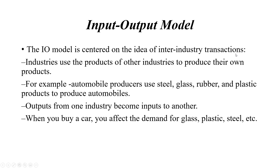The input-output model is centered on the idea of inter-industry transactions — industry uses products of other industries to produce their own products. For example, the automobile industry produces cars and trucks and needs steel from steel mills, glass, rubber, tires, plastic, seat covers, and leather. Output from one industry becomes input to another. When you buy a car, you affect the demand for glass, plastic, and steel — and when demand for a specific material goes up, its price also increases.